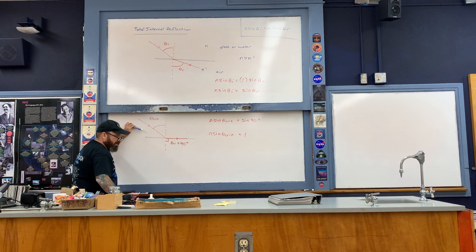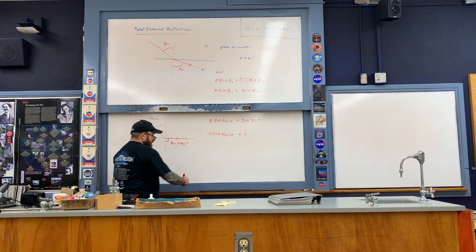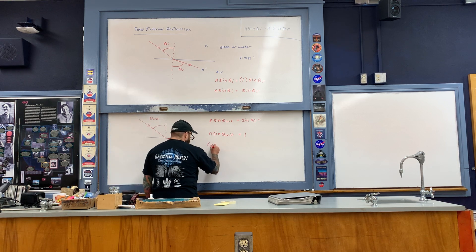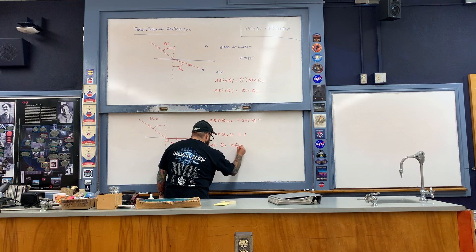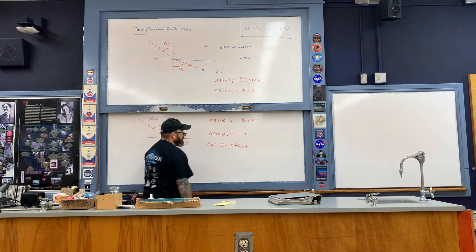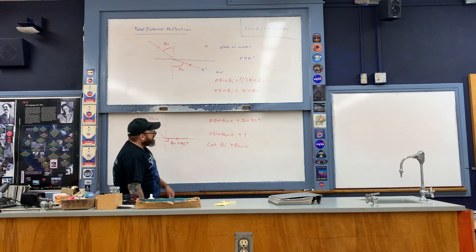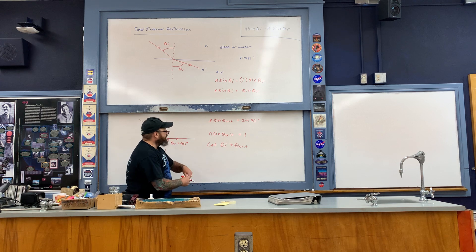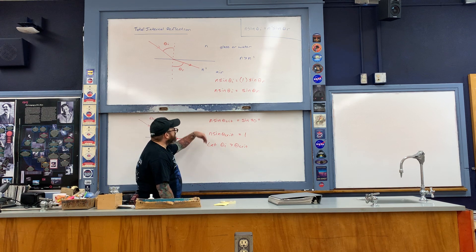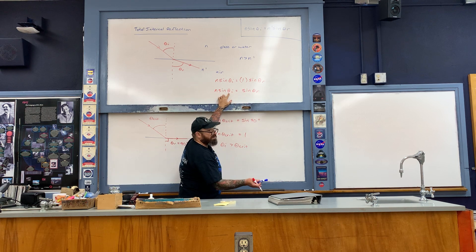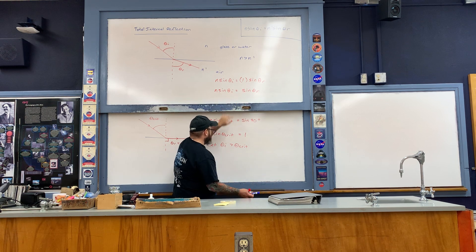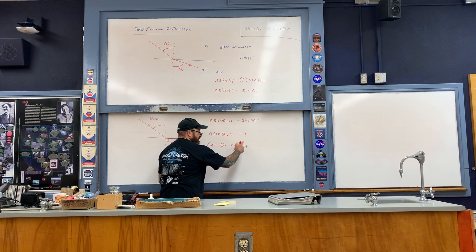Now what happens if we take the angle of incidence and make it bigger than the critical angle? If the angle of incidence is greater than the critical angle, then N times sine of the incident angle becomes greater than one.